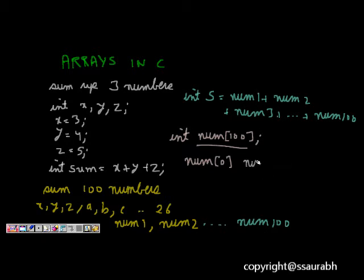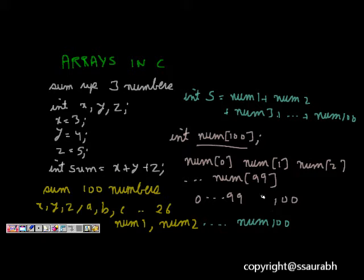And what it means, now I have variables num0, num1, num2, till num99. So we have from 0 to 99, and that means we have now 100 variables and all are of type int.